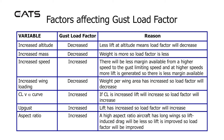The CL versus alpha curve has an increasing effect on gust load factor: if CL is increased, lift will increase, so load factor will increase. An up gust increases load factor because lift has increased. Aspect ratio also increases gust load factor — a high aspect ratio aircraft like a glider has long wings, so lift-induced drag will be less, lift is improved, and therefore load factor will be higher.